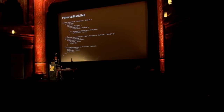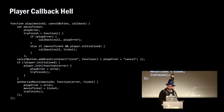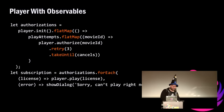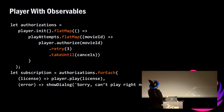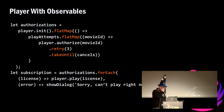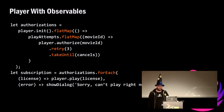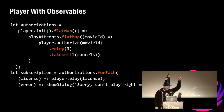The player itself — they originally had callback hell, which ended up as that cow head. But with observables we have a very simple approach: initialize, flat map play attempts, then authorize, retry three times, and takeUntil cancel. That's something we couldn't easily do with callback hell — if someone hits the cancel button, it will actually stop the whole transaction.